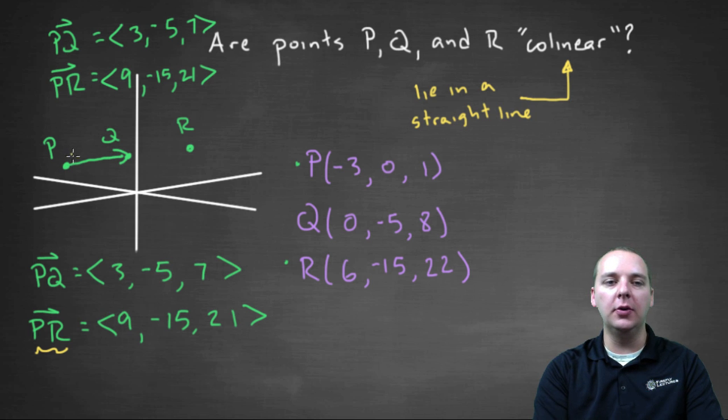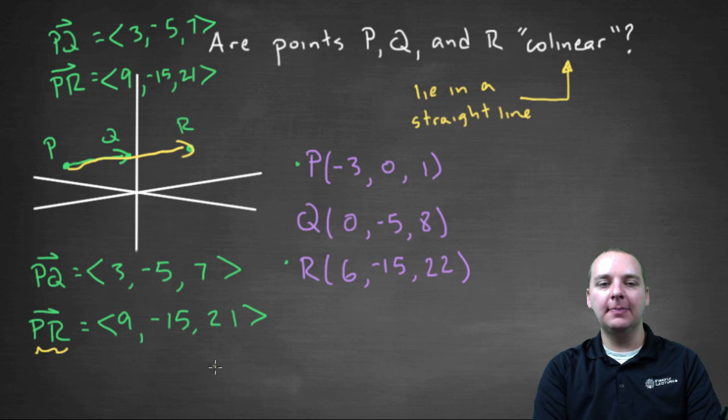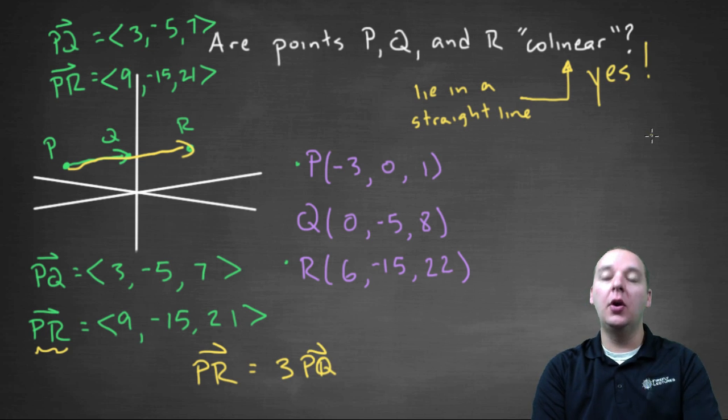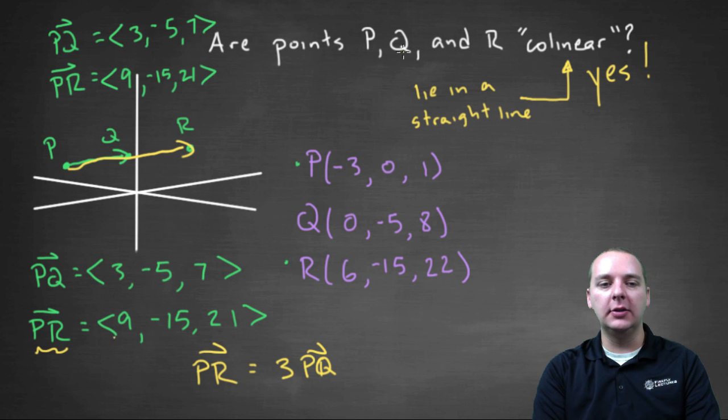PR is in the same direction, just longer. Since PR equals three times PQ, yes, these points must be collinear. If we had gotten a vector like <9, -15, 28>, then PR would not be a scalar multiple of PQ, and the points wouldn't be collinear. But since it is a scalar multiple, these three points do lie in a straight line in space.